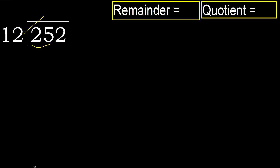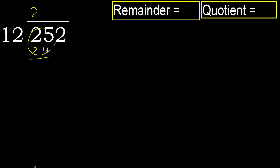12 multiplied by 3 is 36 — 36 is greater. 12 multiplied by 2 is 24 — 24 is not greater. Ok. Subtract. Next.